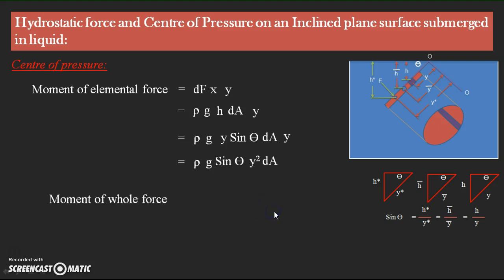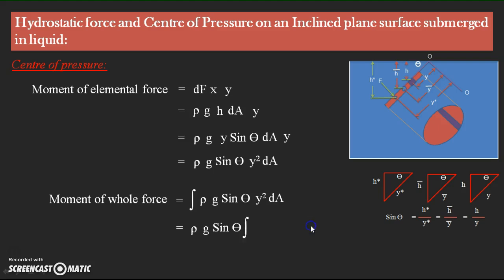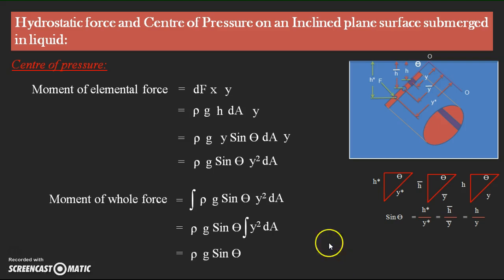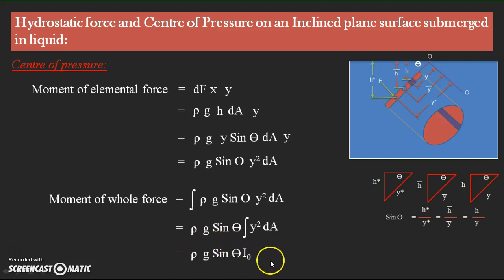To get the total moment, we integrate: total moment = ρG sin θ · ∫Y²dA. The integral ∫Y²dA is the second moment of area, which gives the moment of inertia I₀ about the O-O reference line. So the total moment of the whole force equals ρG sin θ · I₀.